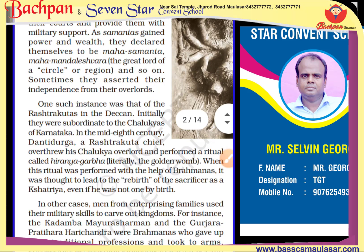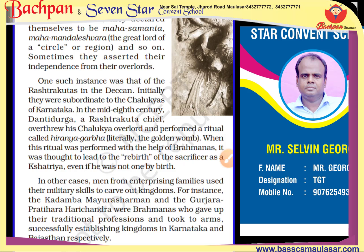One such instance was that of the Rashtrakutas in the Deccan. Initially they were subordinate to the Chalukyas of Karnataka. In the mid 8th century, Dantidurk, a Rashtrakuta chief, overthrew his Chalukya overlord and performed the ritual called Hiranyagarbha — the golden womb. When this ritual was performed with the help of brahmanas, it was thought to lead to the rebirth of the sacrificer as a kshatriya, even if he was not one by birth.